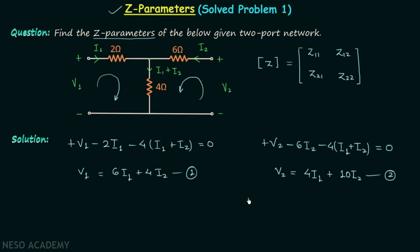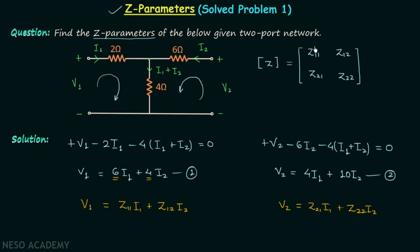From the previous lecture, the standard equations are V1 = Z11·I1 + Z12·I2 and V2 = Z21·I1 + Z22·I2. Comparing equation one with the first standard equation gives Z11 = 6 and Z12 = 4. Comparing equation two with the second standard equation gives Z21 = 4 and Z22 = 10. So the Z parameter matrix has first row [6, 4] and second row [4, 10].